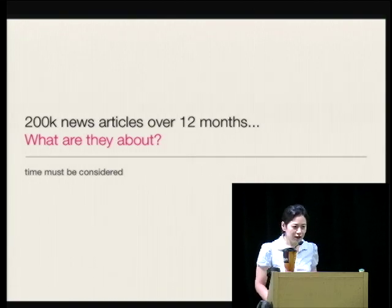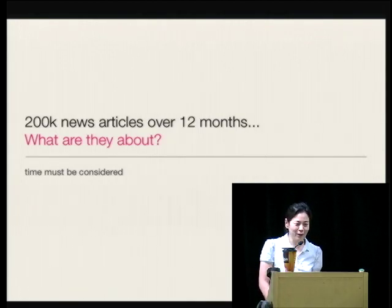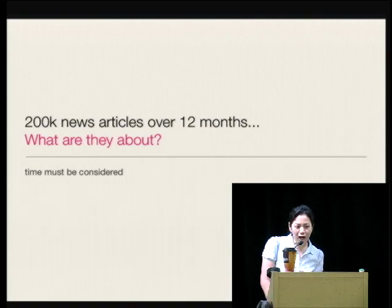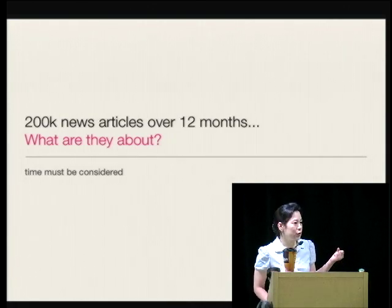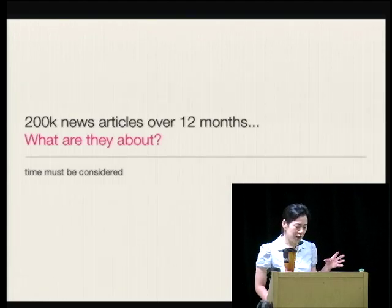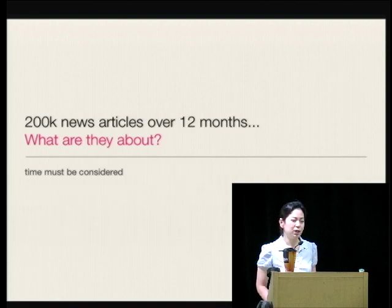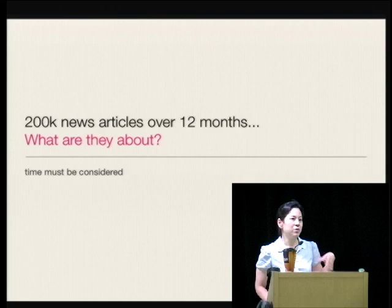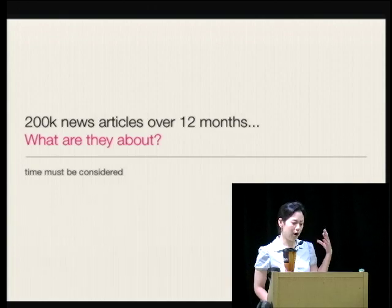Let's look at a smaller problem. If we have about 200,000 news articles over the last 12 months, we can ask what the news articles are about. One difference here is that time is a very important dimension, because news is inherently sequential and temporal - you want to know what happened when, how long it lasted. So we need something that considers time.